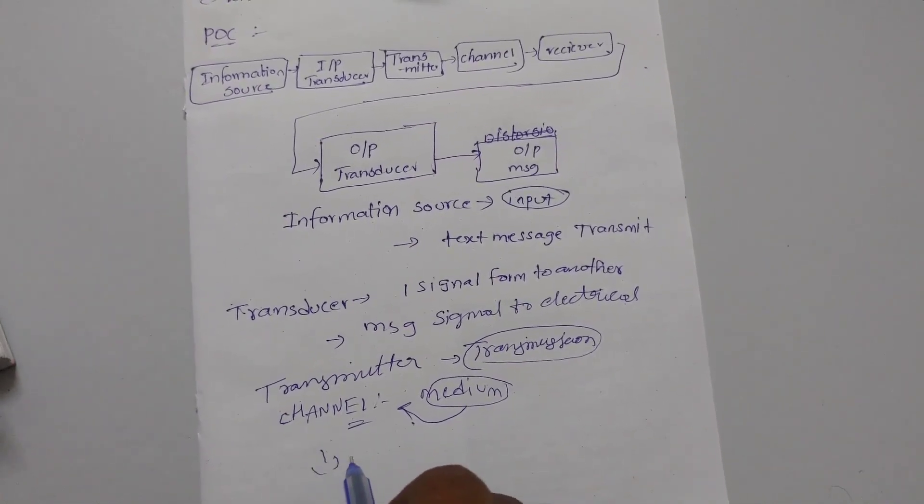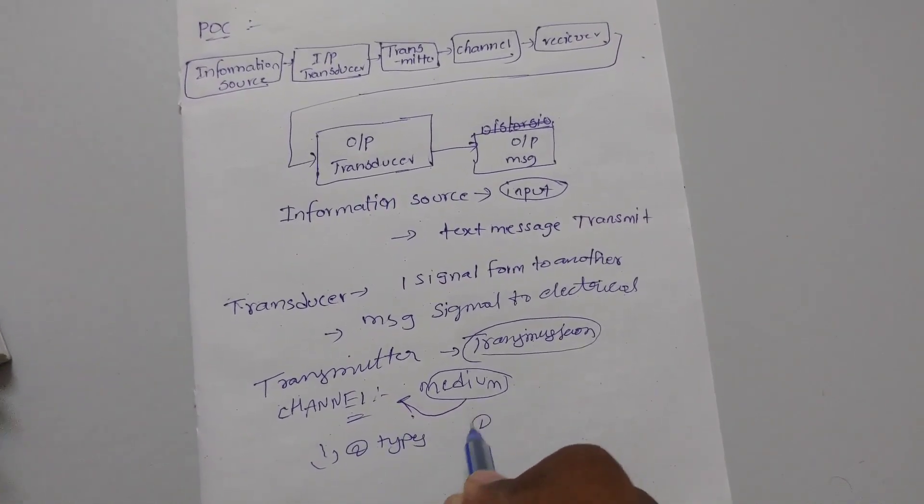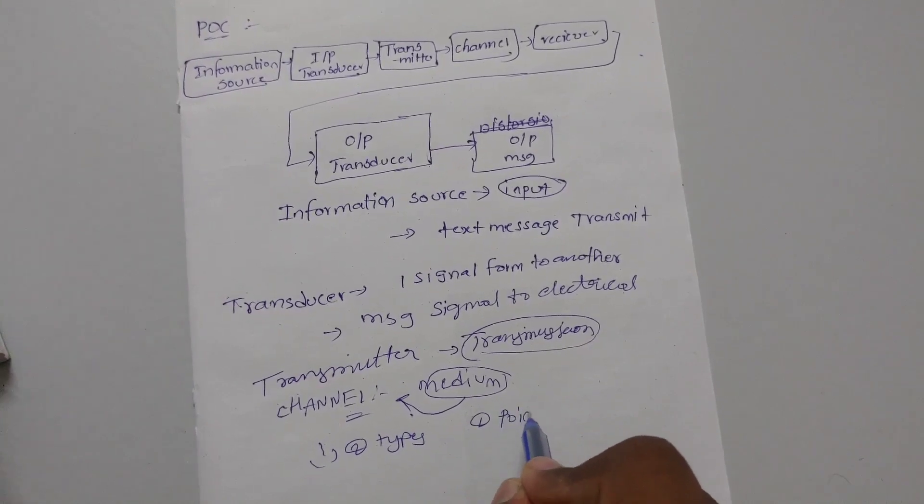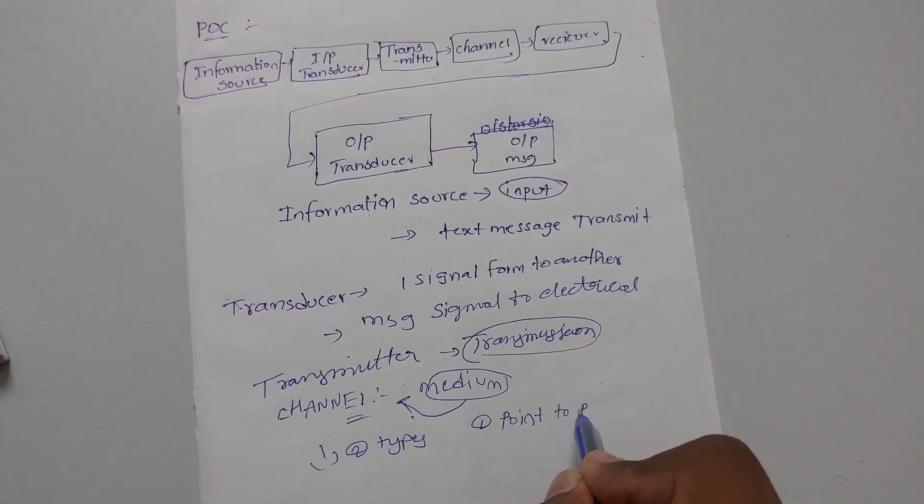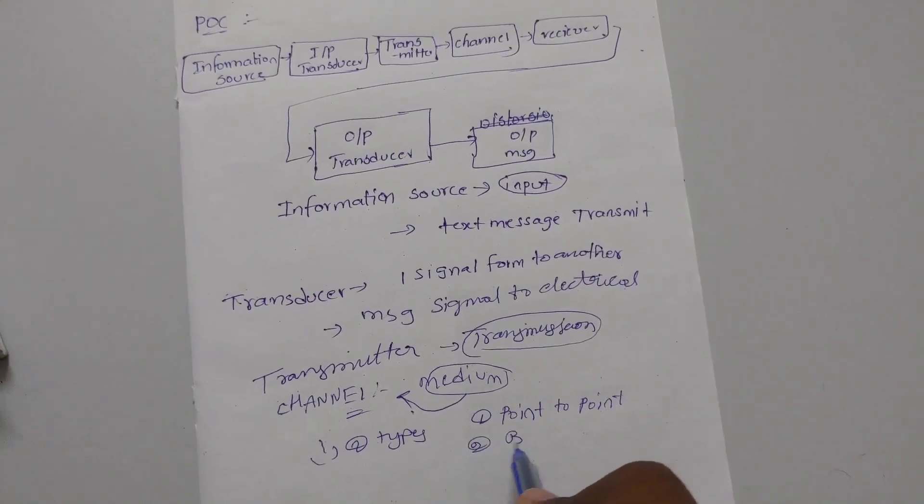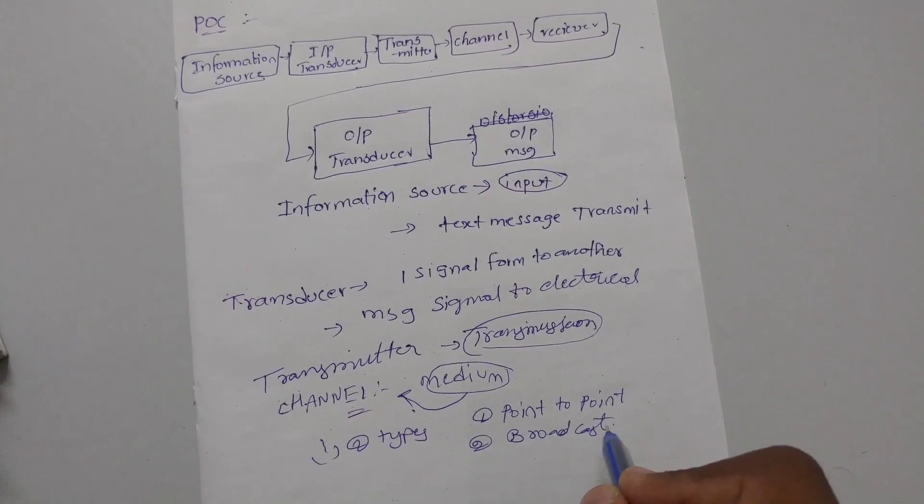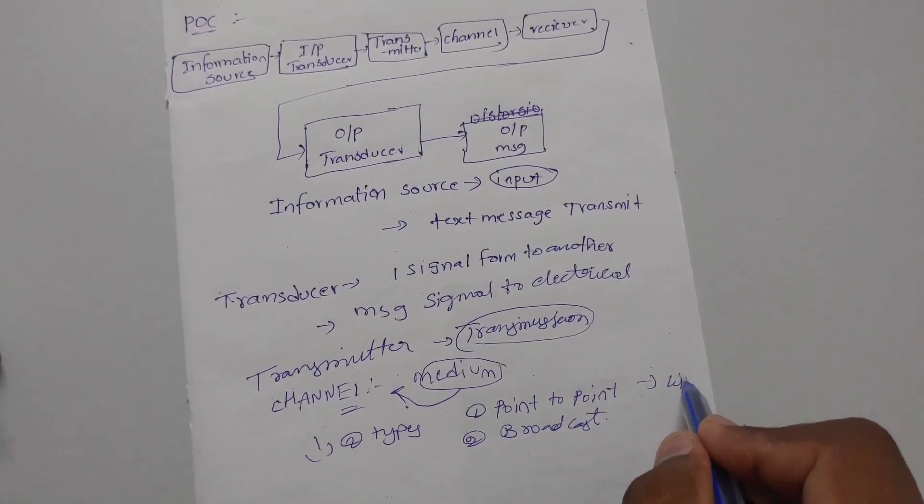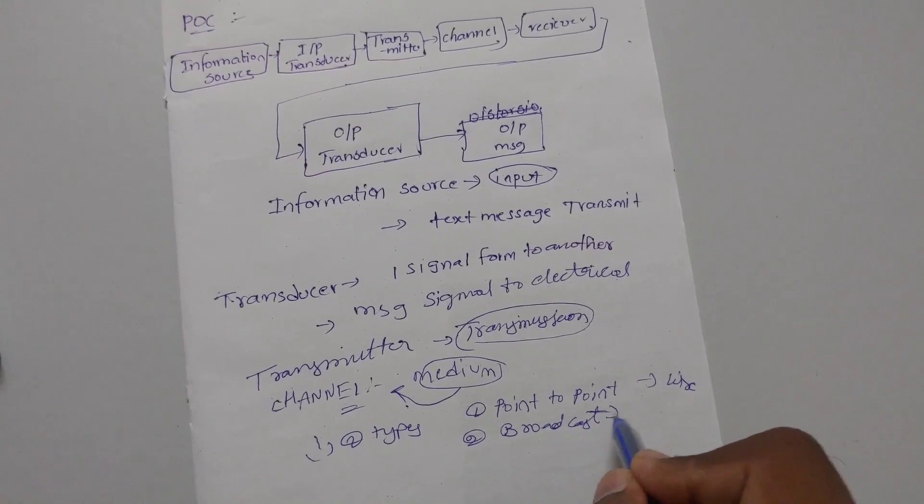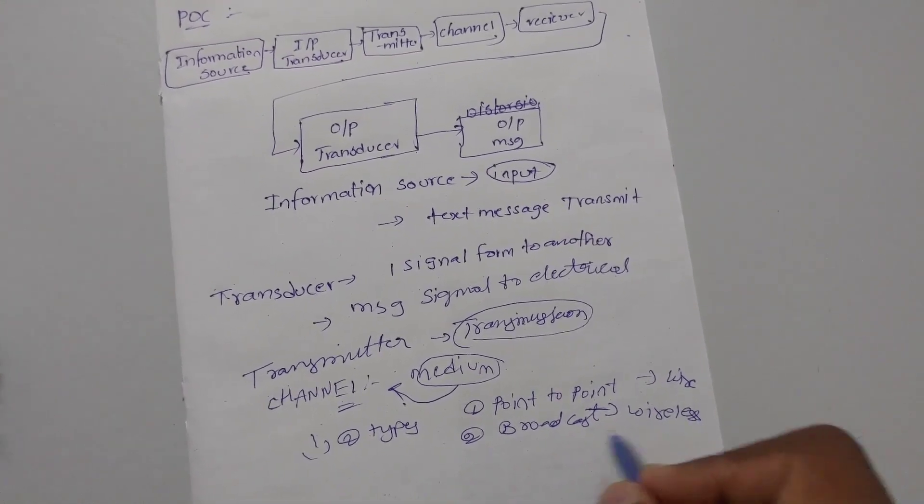Signal in various places through channel. The medium is called channel. There are two types of channels: point to point medium and broadcast medium. First, point to point channels include wired channels, optical fibers, microwave. Next is broadcast like Wi-Fi, Bluetooth.